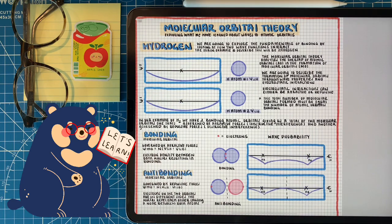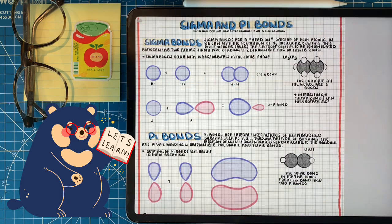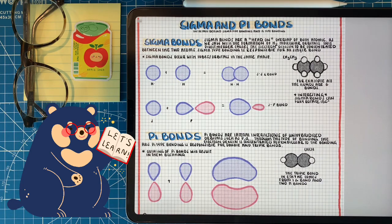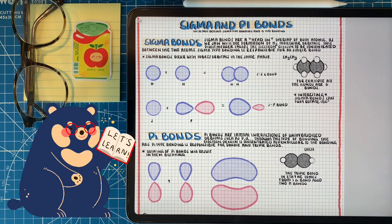We took everything from the wave-particle duality principle all the way to molecular orbital theory. I hope this video was helpful. In the next video, we're going to start talking about different types of bonds, such as sigma and pi bonds, and work our way to talking about hybridization. All the graphics you've seen in this video are available for free download on my website if you want to study along. Hope you have a great day — see you later!